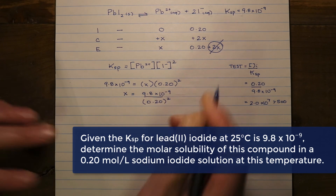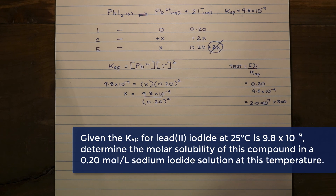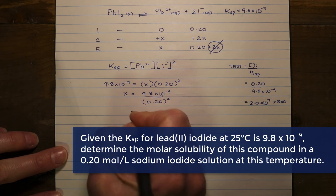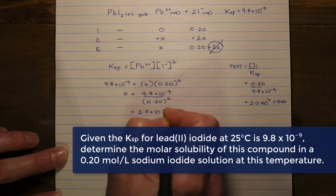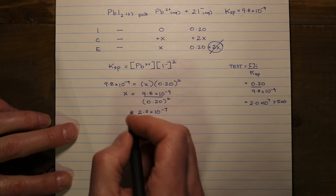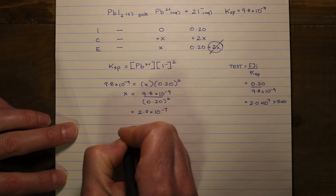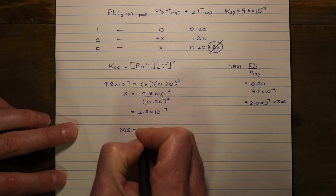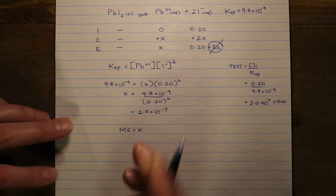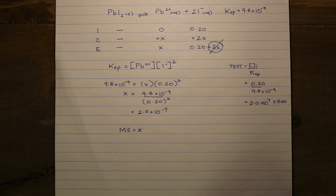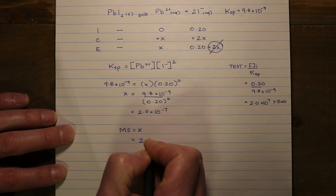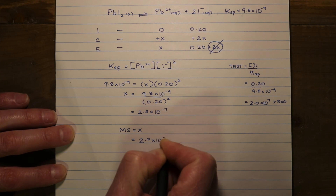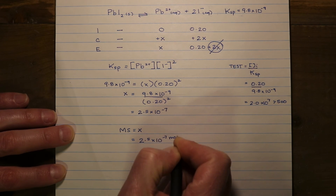Plugging in our simplified values and solving for x, we get 2.5 times 10 to the negative 7. Since x represents our molar solubility — there is a 1-to-1 ratio between lead ions and the lead(II) iodide dissociating — the molar solubility is 2.5 times 10 to the negative 7 moles per liter.